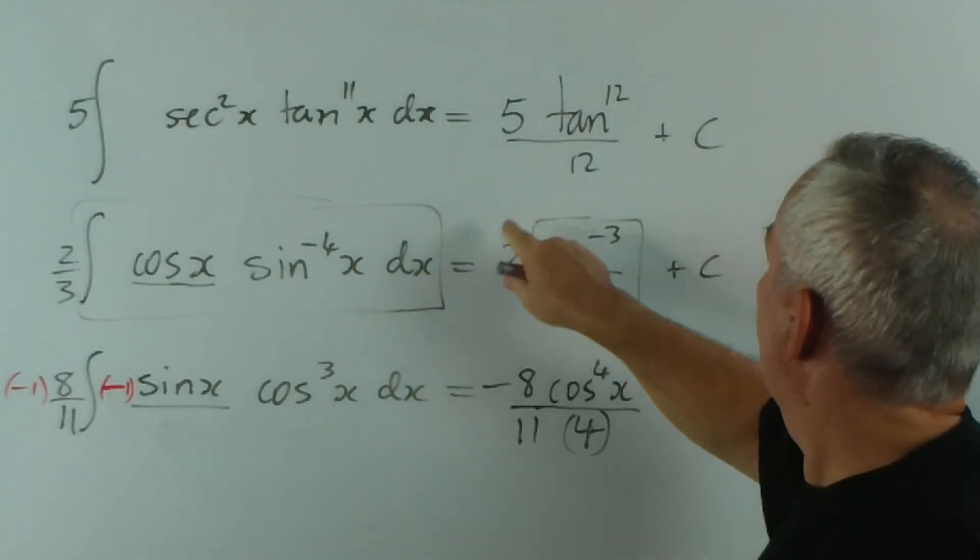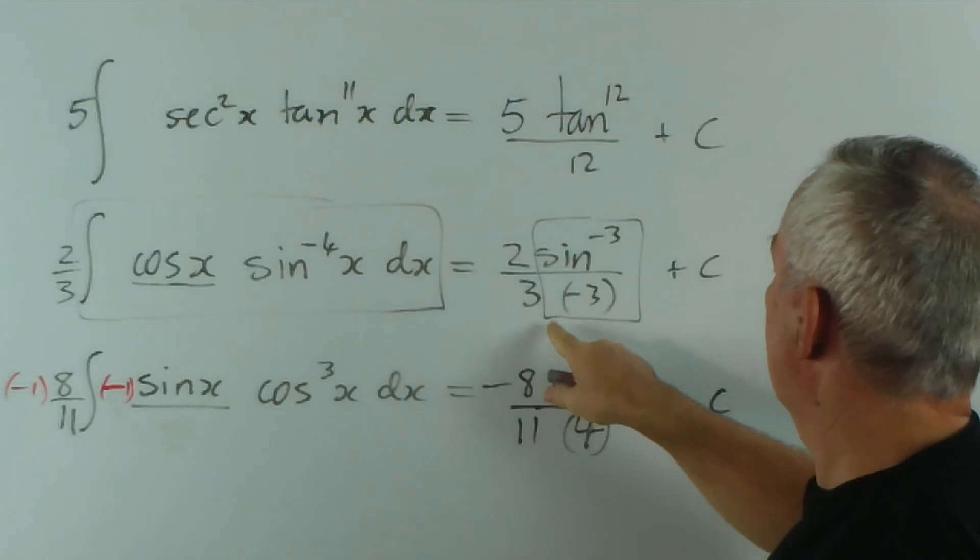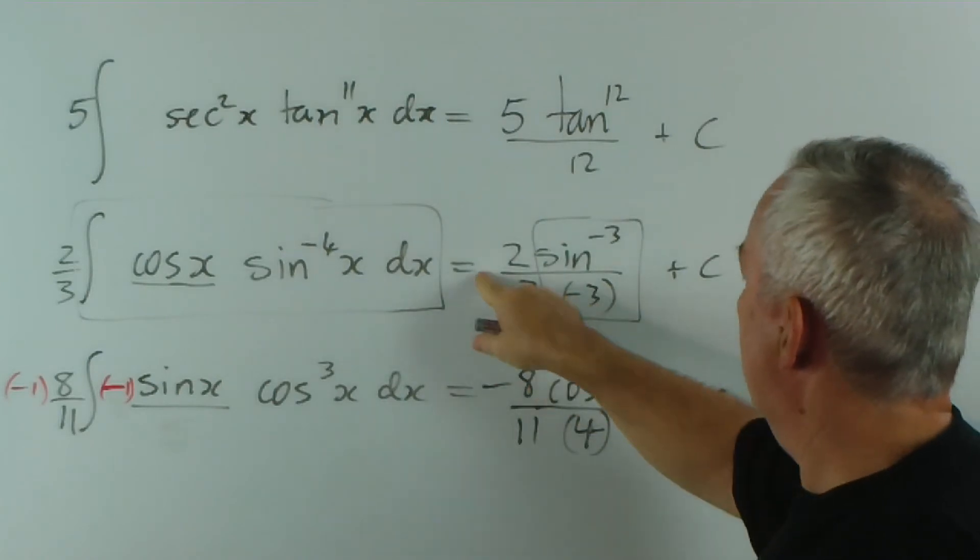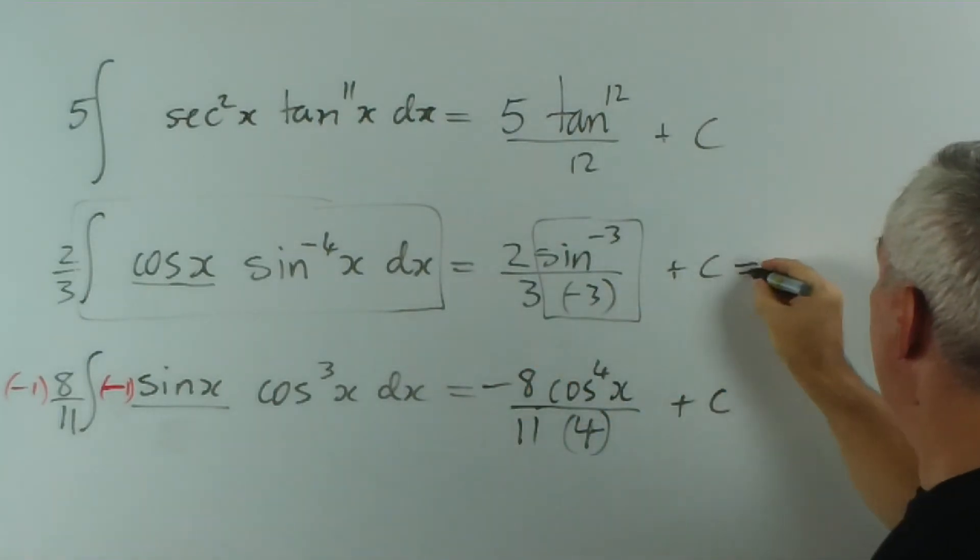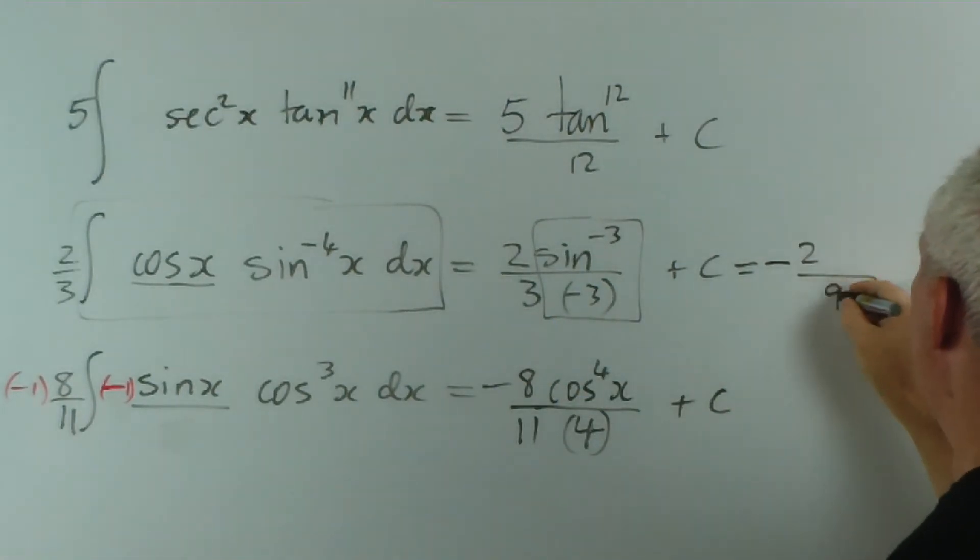Now of course you would leave that alone. This one, the minus sign would come out the front. Actually, I've got room to do that. And three threes are nine, so we'd have minus 2 on 9, sine to the minus 3 of x. Dear oh dear.